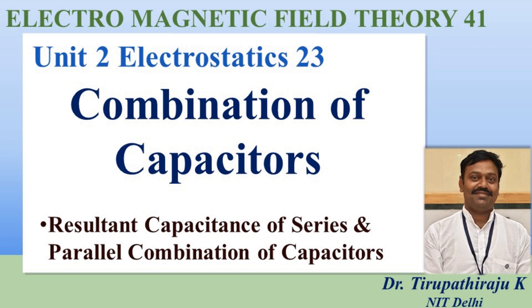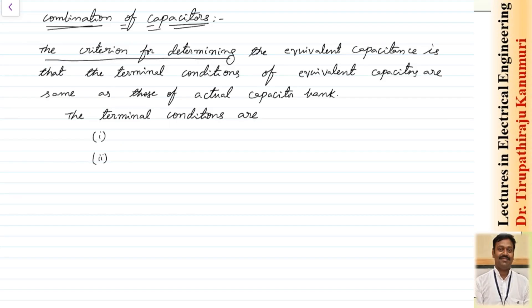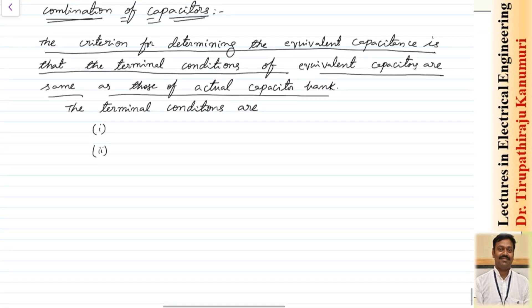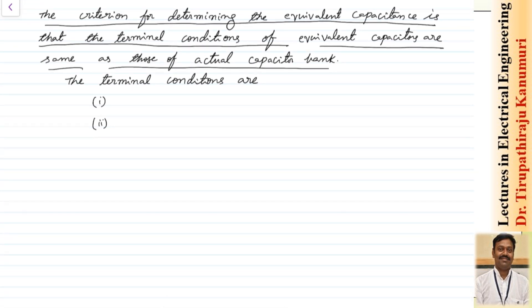Hi all, today we are going to discuss about the combination of capacitors. The criterion for determining the equivalent capacitance is that the terminal conditions of the equivalent capacitors are same as those of the actual capacitor bank. The terminal conditions must remain same in both the cases, then we can tell that whatever analysis we have made is correct.